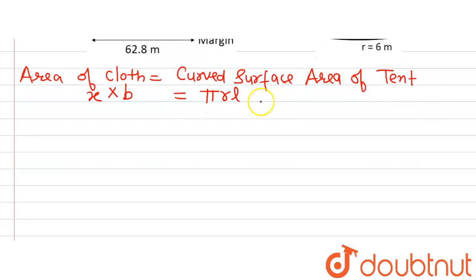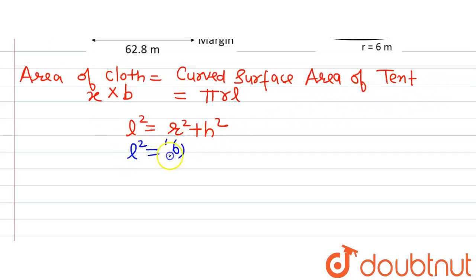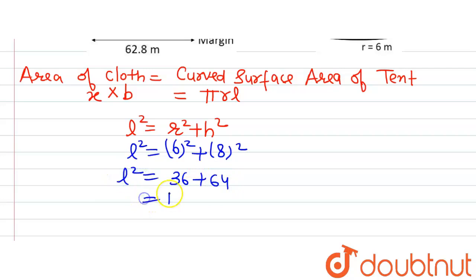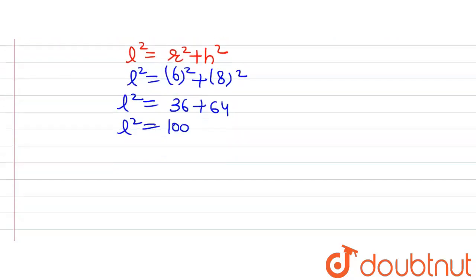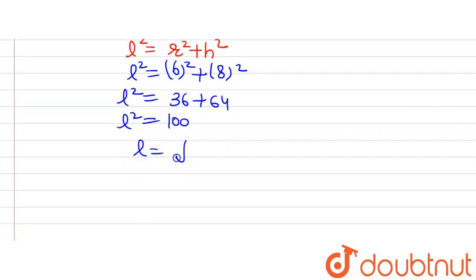To find the slant height, the formula is l² = r² + h². Putting in the values: l² = 6² + 8² = 36 + 64 = 100. So l² = 100, which gives l = √100 = 10 meters. This is the slant height of the cone.